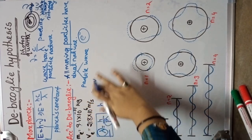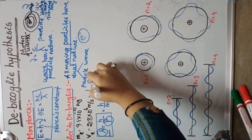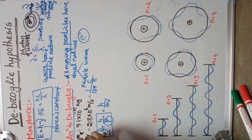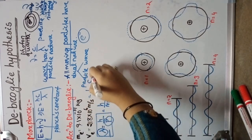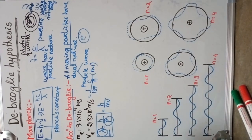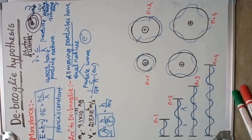The velocity of an electron is calculated as 1 by 137 times c by n, where n is the number of the orbit. The velocity of the electron for the first orbit, n equals to 1, is 2.18 into 10 to the power 6 meter per second. That velocity is nearly equal to the velocity of light. Since the mass is very less and velocity is nearly equal to the velocity of light, it exhibits wave characteristics.